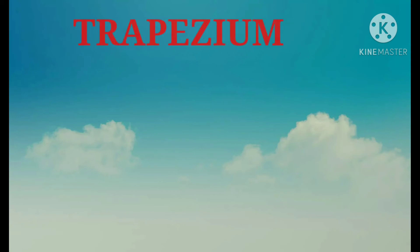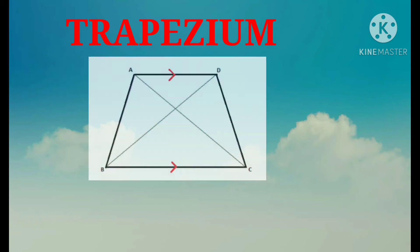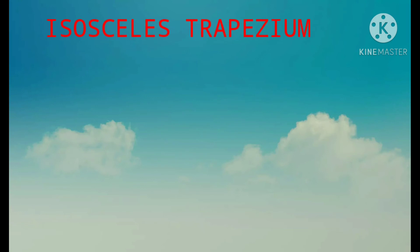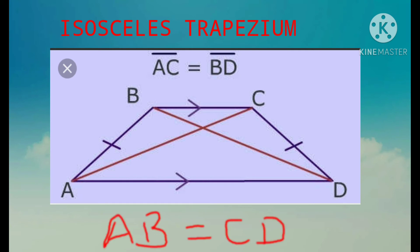Now let us understand the next quadrilateral named trapezium. A trapezium is a quadrilateral having one and only one pair of parallel sides. A trapezium is said to be an isosceles trapezium if its non-parallel sides are equal. The diagonals of an isosceles trapezium are always equal.